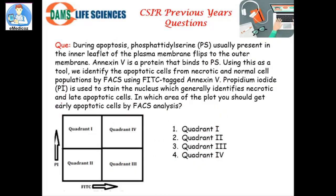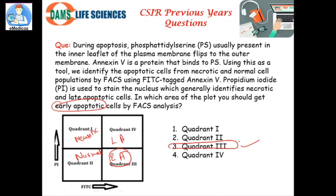So to answer the question: the normal cells are in the low/low quadrant, early apoptotic cells are in quadrant 3 (high FITC, low PE), late apoptotic cells are in the high/high quadrant, and necrotic cells are in the low FITC/high PE quadrant. The correct answer is quadrant 3. The question is easy if you know the concept.